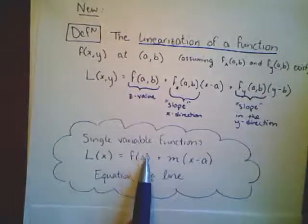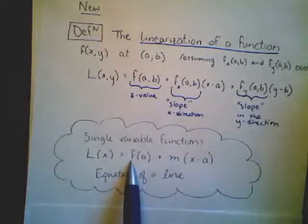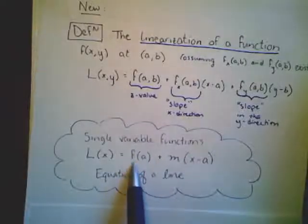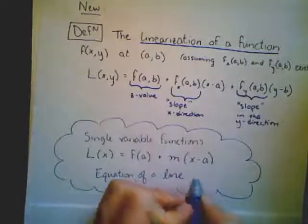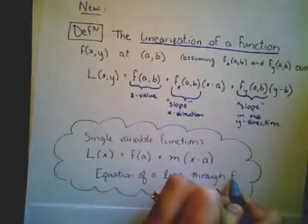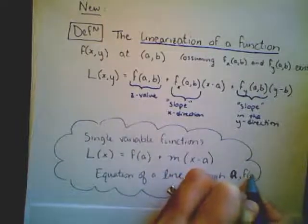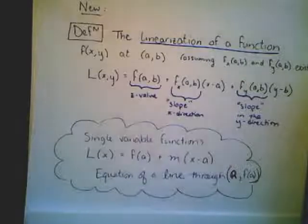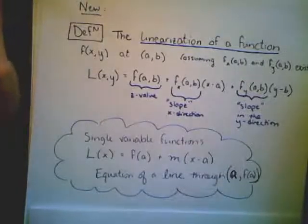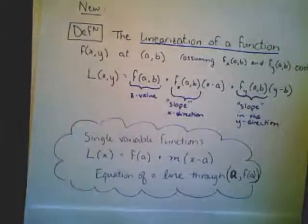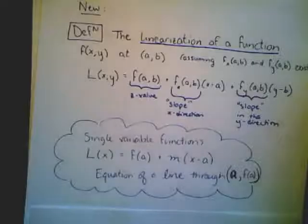I'm taking my x value. I'm shifting it over by a to make sure that it goes through the point a. This is the equation of a line through the point a, f of a, and it has slope m. So in this case, our linearization with a couple of caveats, instead of being a line, it's going to end up being a plane.